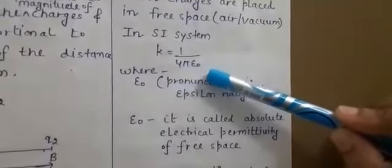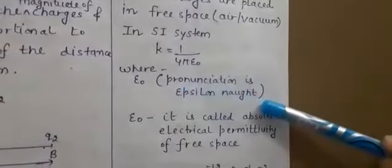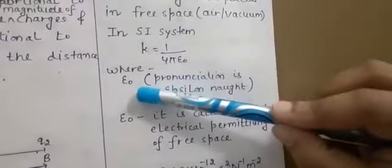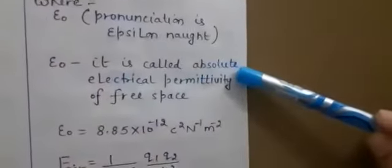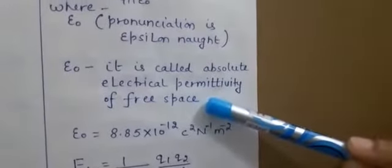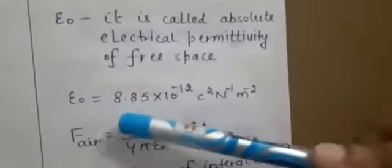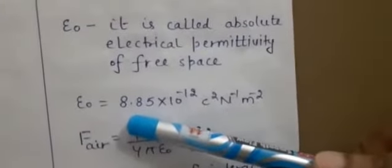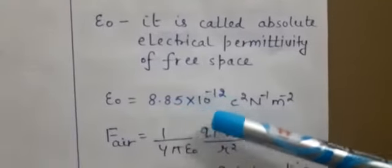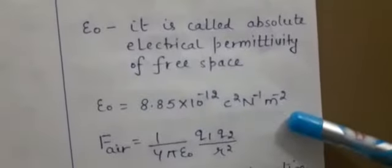Now epsilon 0 — the pronunciation is epsilon naught. Exactly, this epsilon 0 is called the absolute electrical permittivity of free space. This is a constant; for air it has a fixed value, and you have to remember this value as it will be used in numericals. Its value is 8.85 × 10⁻¹² Coulomb square per Newton per metre square.